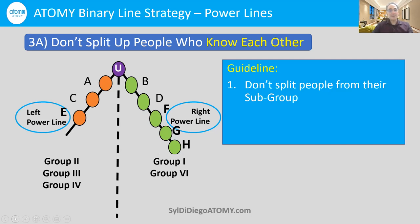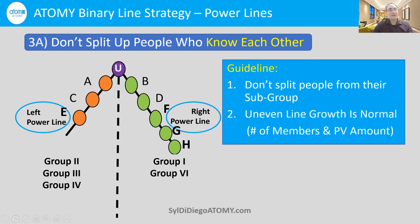Let's say you have 10 or 20 people on your right side and only two or three people on your left. You might think about where to place new members given this uneven growth. But in Atomy, uneven line growth is normal — both uneven numbers of registered members as well as uneven PV growth. So let that go. The most important thing is to keep people in subgroups because of the big money we talked about earlier.